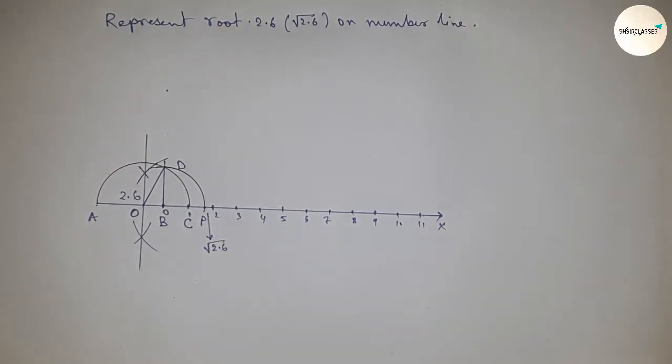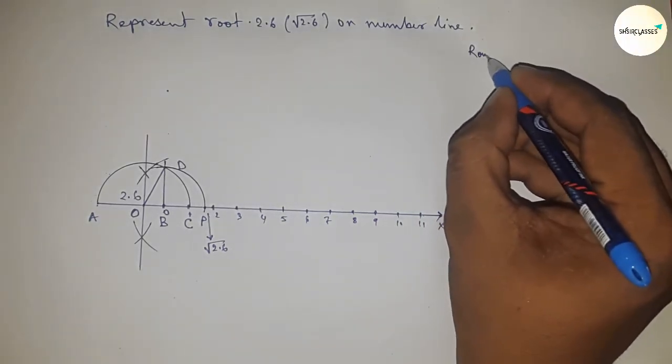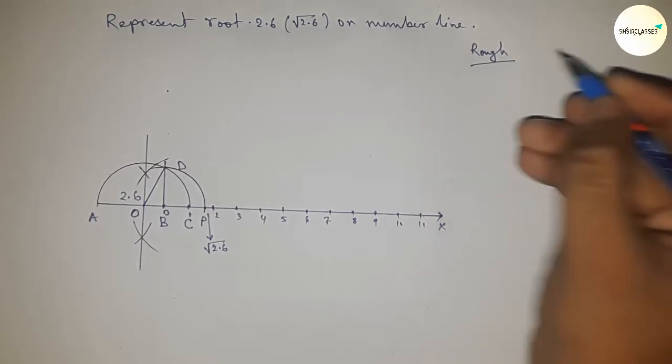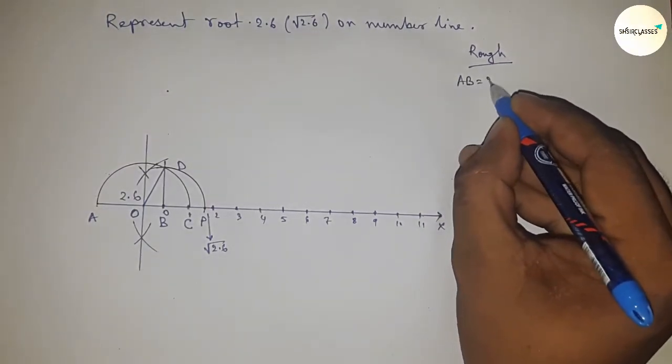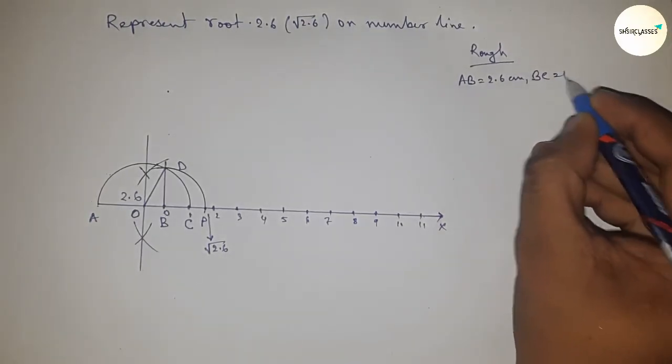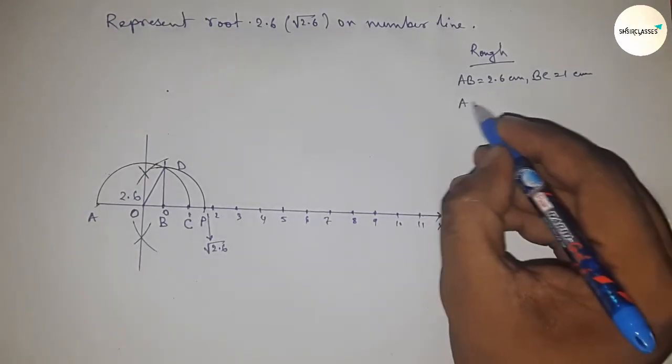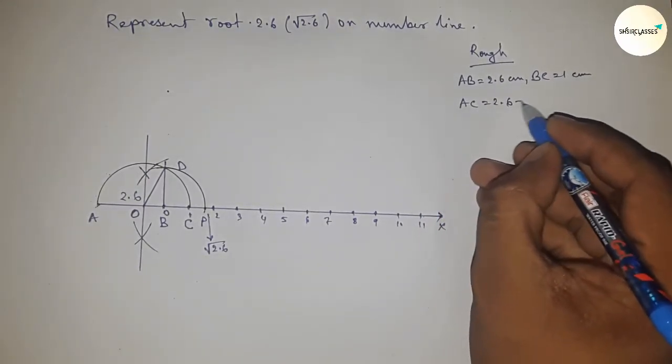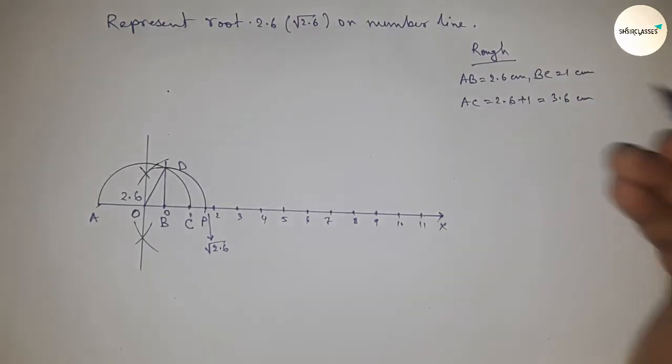So this is the representation of root 2.6 on the number line. Now let's roughly discuss the back calculation of root 2.6. So given AB equals 2.6 centimeters, BC equals 1 centimeter, so AC equals 2.6 plus 1, which is 3.6 centimeters.